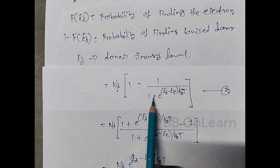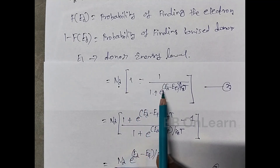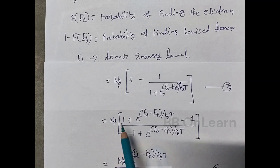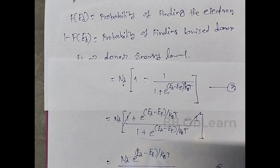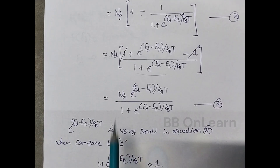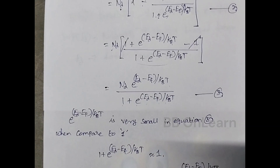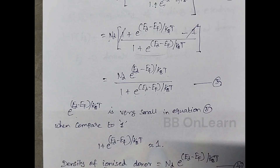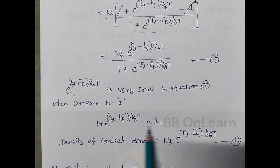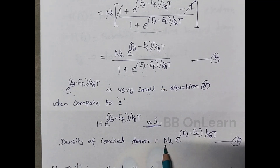So f(ED) involves the exponential term (ED minus EF) divided by kBT. Working out the denominator — which is 1 plus e to the power (ED minus EF) / kBT — we can approximate, since this exponential term dominates, so approximately 1 in the denominator falls away. The final density of ionized donors equals ND times e to the power (ED minus EF) / kBT. That is equation number four.